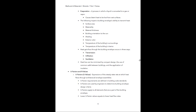We need to touch on U-factors and R-values. U-factors, also known as U-values, are expressions of the steady rate at which heat flows through architectural envelope assemblies. U-factor requirements are defined in building code standards. If you look at local building codes for building envelope assemblies, they'll have specifications about the U-factors a building needs to adhere to. U-factors are used by engineers to determine building envelope design criteria, and they apply to all elements of a building's envelope. A lower U-factor rating equates to a lower heat flow rate — the goal is to make it as low as possible.